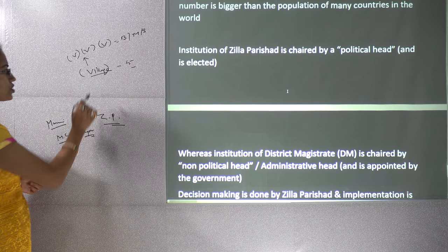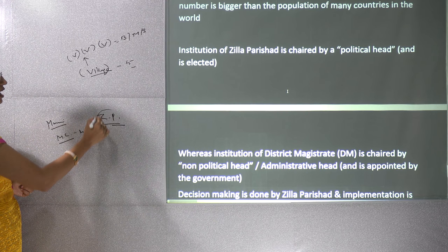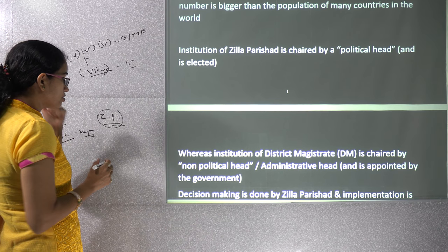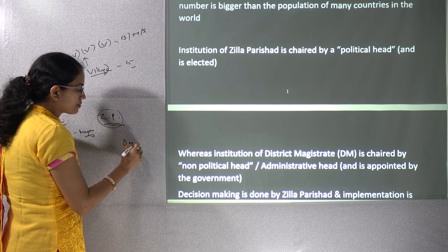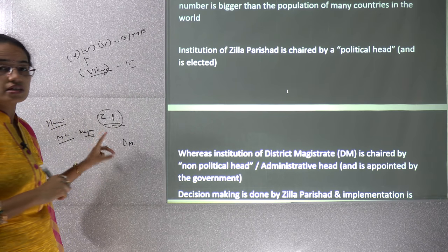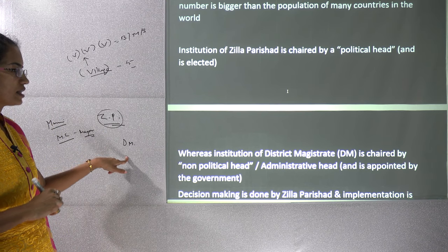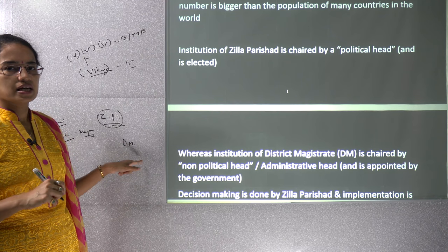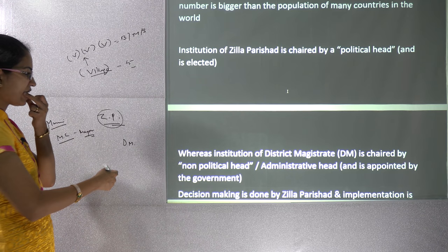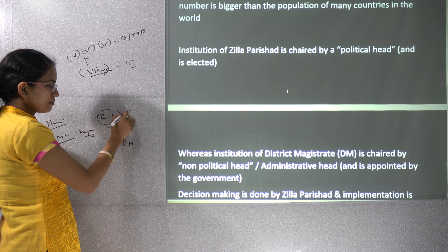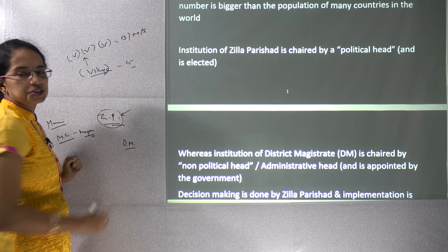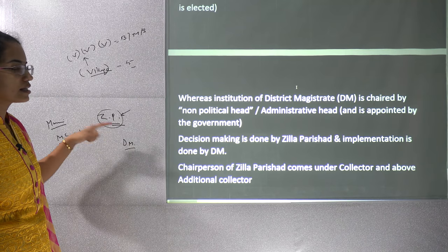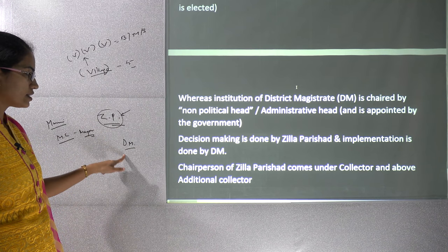The Zilla Parishad is the political head at the district level. When it comes to the division of power, there is both a District Magistrate and a Zilla Parishad. The District Magistrate is a non-political civil servant or administrative head. Decision-making is done by the Zilla Parishad, while execution is carried out by the District Magistrate. The chairman of the Zilla Parishad works under the collector or District Magistrate.